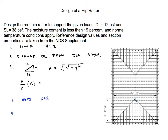The area of influence is the total area, but half of the loading goes to the bearing walls, so you divide the square area by two — the rest goes to the hip beam. Once you have the area of influence, multiply it by the loading (dead plus snow) to get the total weight acting on the hip beam.